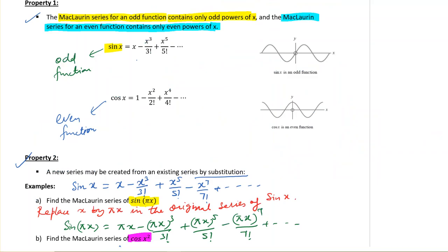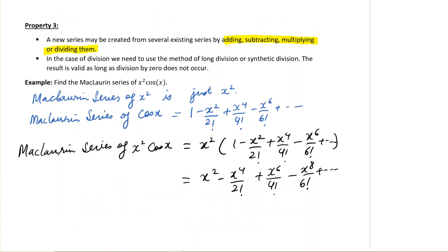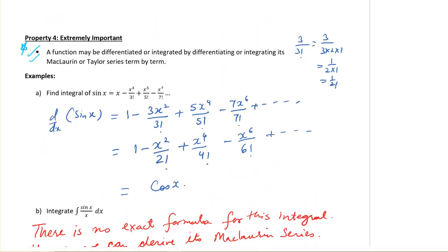We have learned four properties of series. First: the Maclaurin series of an odd function contains only odd powers of x, and of an even function contains only even powers of x. Second: a new series may be created from an existing one by substitution. Third: you can create a new series by adding, subtracting, multiplying, or dividing existing series. Fourth: a function may be differentiated or integrated by differentiating or integrating its Maclaurin or Taylor series term by term. I hope that makes sense. If you like this video, hit the like button. I will see you next time.